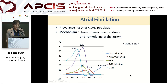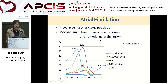Longer life expectancy increases the risk of atrial fibrillation in adult congenital heart disease. The prevalence is 31%. The mechanism of AF is related to chronic hemodynamic stress and remodeling of the atrium. As shown in the figure, patients with congenital heart disease develop AF at a younger age compared to the normal population.